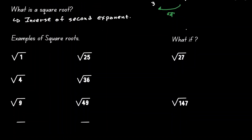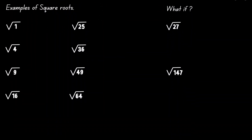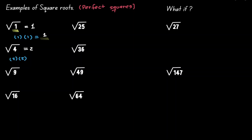Let's take a look at some examples. Here we have examples of what we call perfect squares — numbers where the square root is an integer. The square root of 1 is equivalent to 1, because 1 multiplied by itself gives you 1. The square root of 4 is 2, because 2 times 2 gives you 4. The square root of 9 is 3, because 3 multiplied by itself gives you 9. The square root of 16 is 4, because 4 times 4 gives you 16.